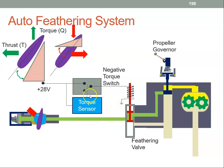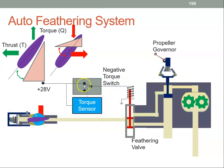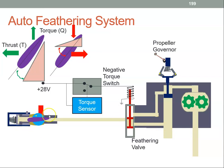So let's assume the engine has failed and the switch moves. The switch moves up, the solenoid gets energized, the feathering valve moves, and that allows the feathering spring to push the oil back to the engine and allows the propeller to go to the feathered position.